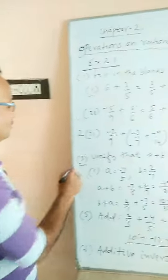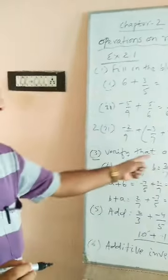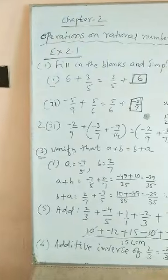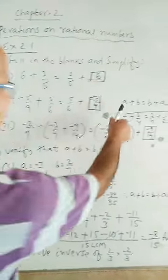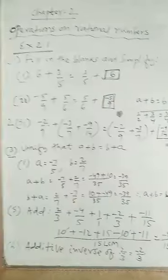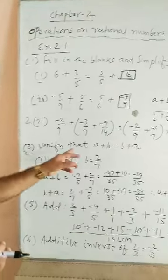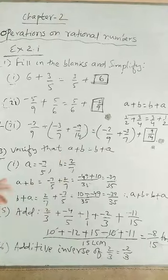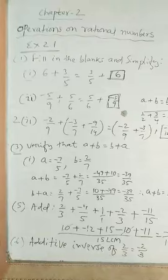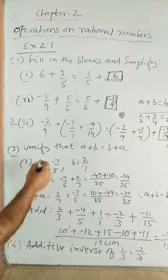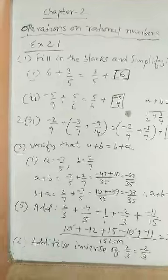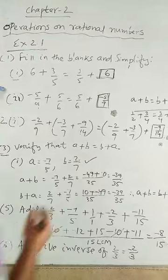Now, let us go to question number 3. Verify that a plus b equal to b plus a. So, I have told the formula, rational numbers are commutative. So, we will see, taking an example, a plus b equal to b plus a. Here, take an example, a is minus 7 by 5 and b is 2 by 7.